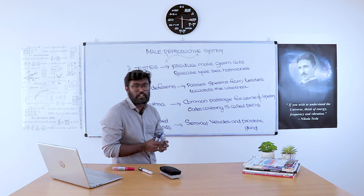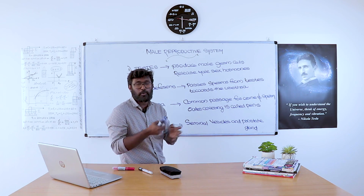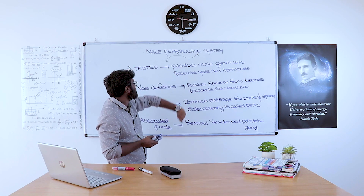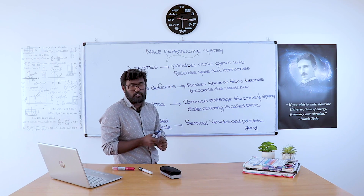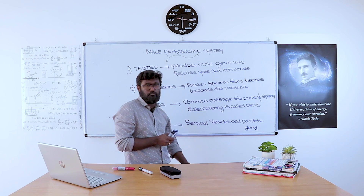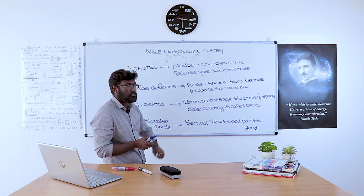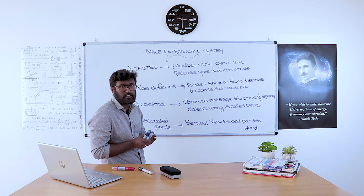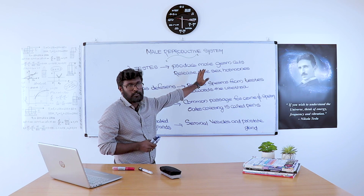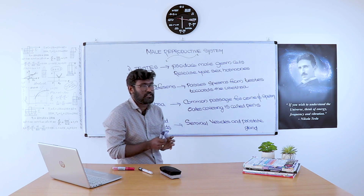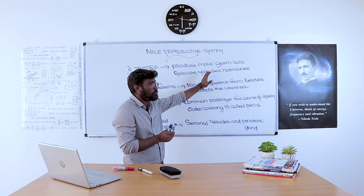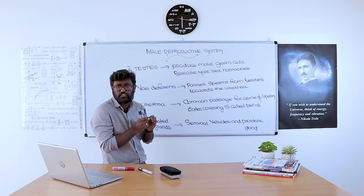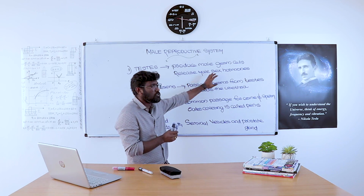Moving to the male reproductive system — now we are moving to the sexual reproduction case. The male reproductive system consists of the testis, vas deferens, urethra, and associated glands. The testis produces male germ cells and releases male sex hormones called testosterone.